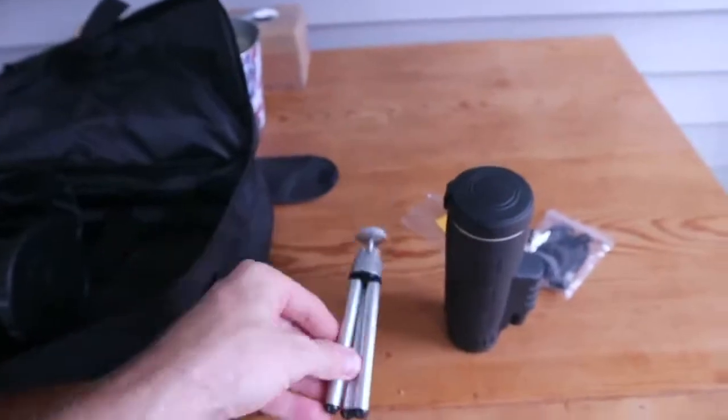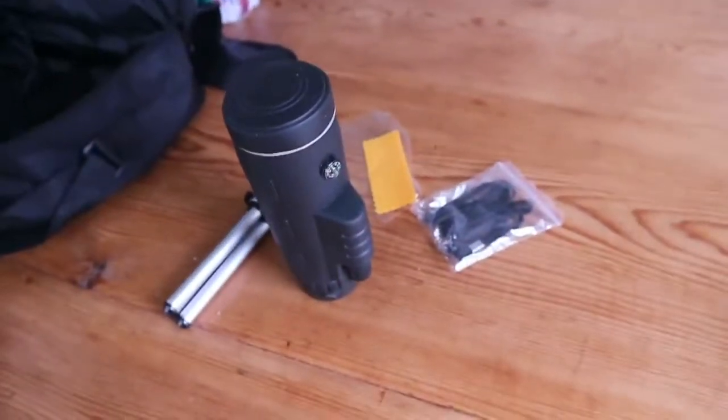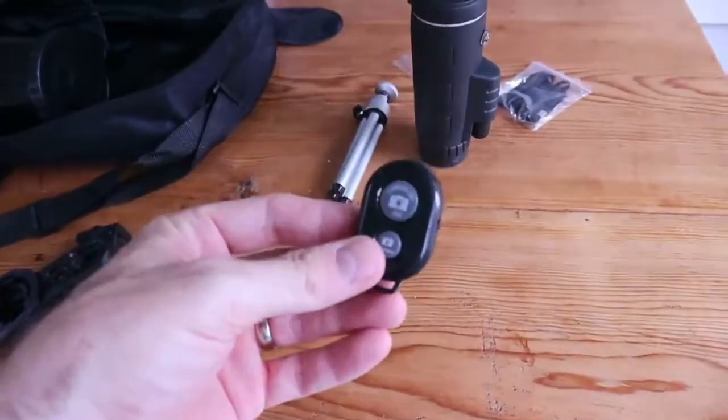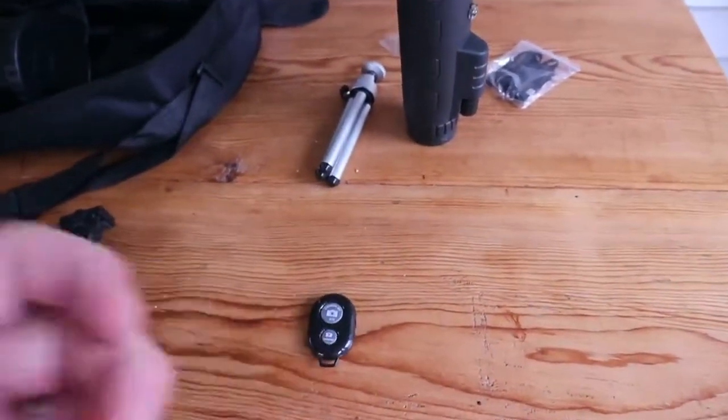And last but not least, it comes with a Bluetooth-powered shutter button. So you can pair this via Bluetooth to your smartphone and actually take pictures without actually having to touch your phone itself.